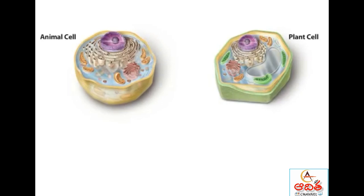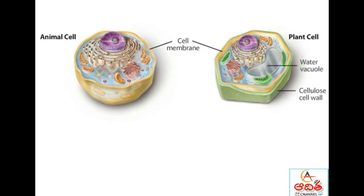Plant and animal cells have at their periphery a cell membrane made up of a phospholipid bilayer. Plant cells have an added layer outside the cell membrane called the cellulose cell wall, which provides strength and protection. In a fully hydrated plant, a large water vacuole dominates the plant cell. The vacuole and the cell wall together keep the plant cell rigid, helping the plant stand upright.